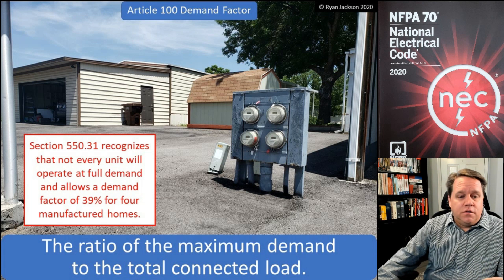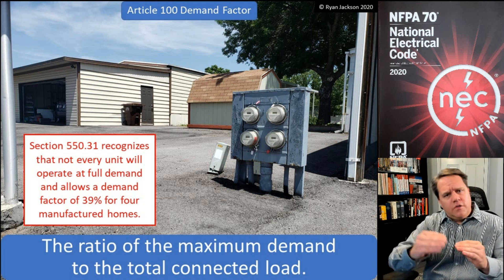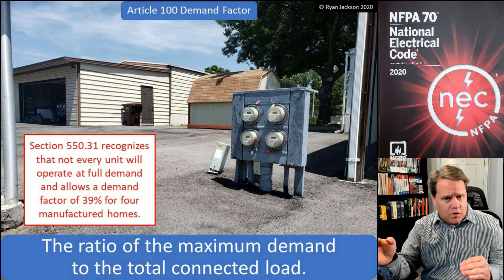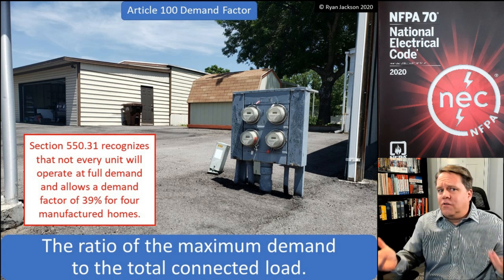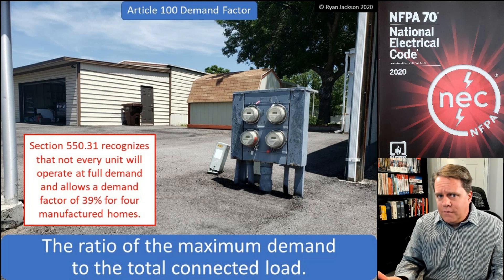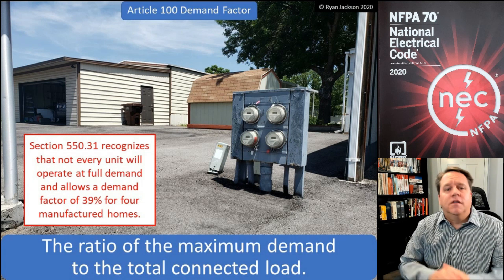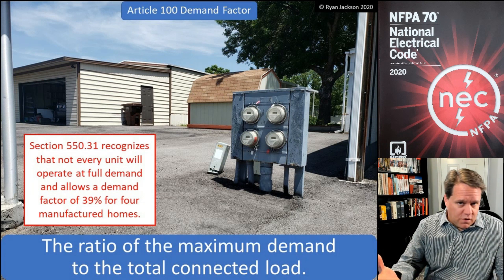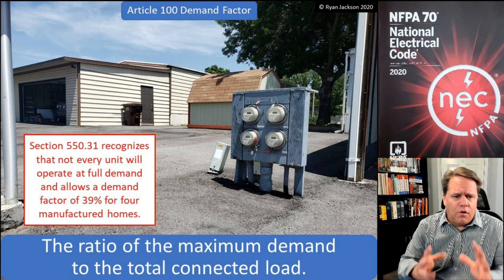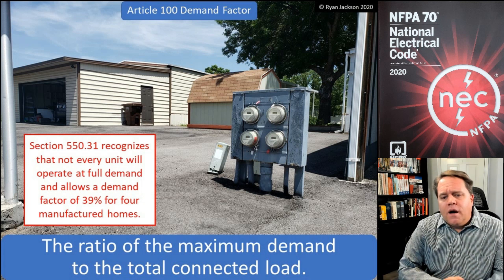Section 550.31 allows a demand factor of 39% for four manufactured homes. Of course, the more manufactured homes you have, the higher that number is going to get. Not all four units are running full bore at the same time, so we apply a demand factor and size it not at 400 amps but at something lower. That's what a demand factor is — the ratio of the maximum demand to the total connected load.